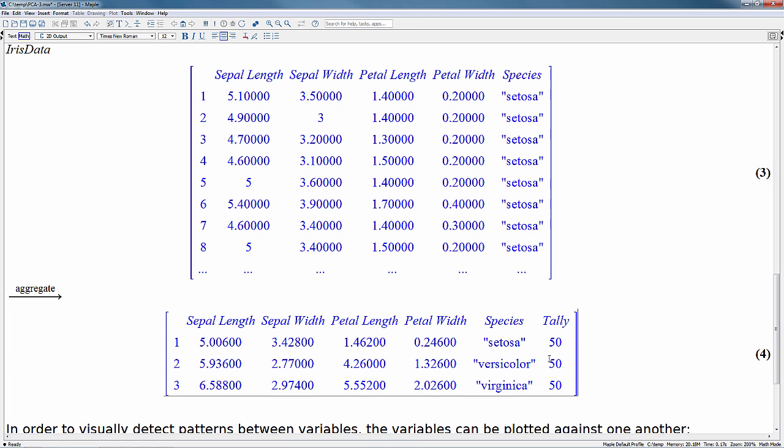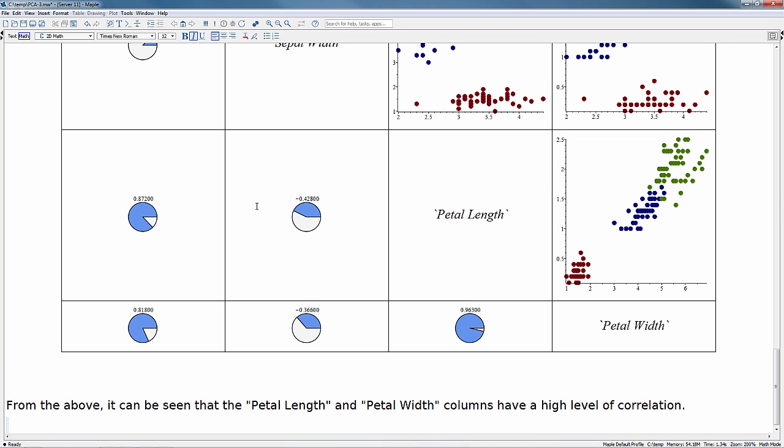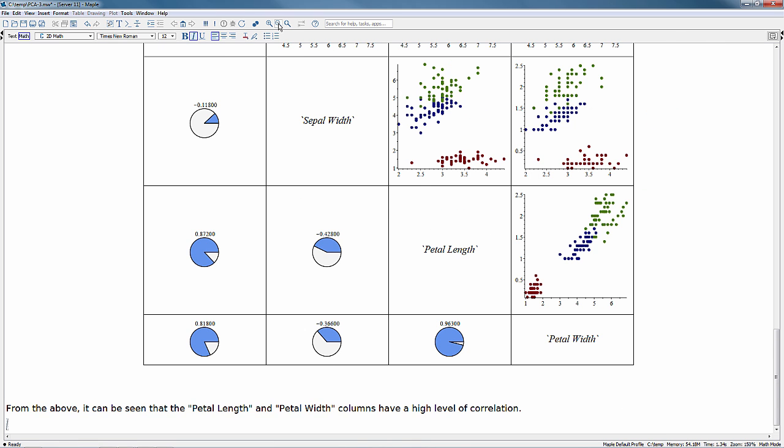We'll be showing some more demonstrations in a second of ways we can start to differentiate based on variables such as species. One of those ways we can do this is by using a command we call gridplot in statistics. This command is going to let us detect some patterns, do some exploratory data analysis, before we move on to doing the principal component analysis on our data. So running this command, I'm just going to zoom back out so we can put everything on one screen.